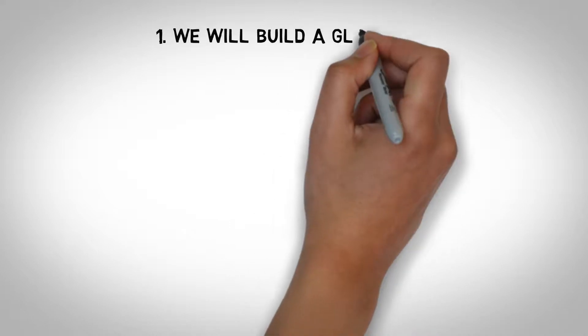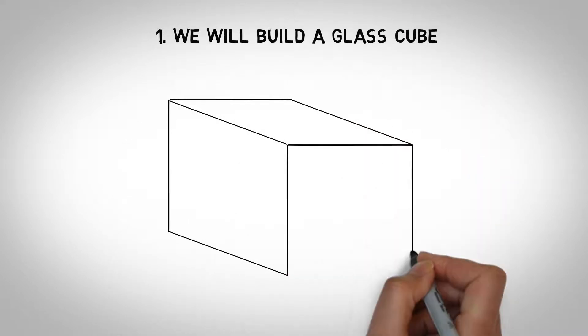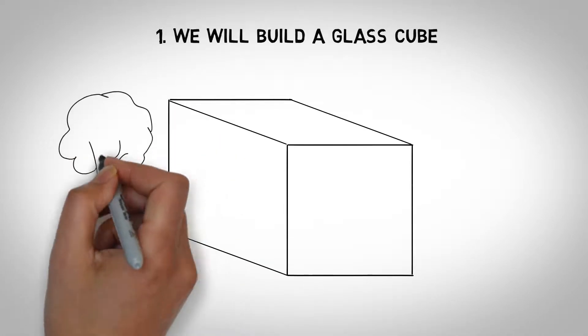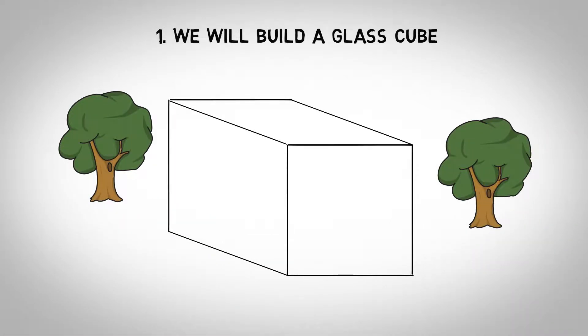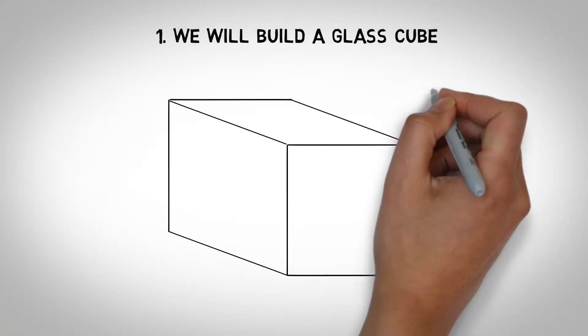1. We will build a glass cube. Our smart pop-up stores can be situated literally anywhere. In a city park, beside a very busy street, in a shopping mall, or in an airport.